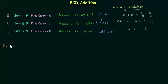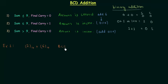Example number 1 is based on case 1, and we have to perform the addition 2 plus 6. So these are the two numbers and we have to perform the BCD addition. Let's move to the solution of this example.